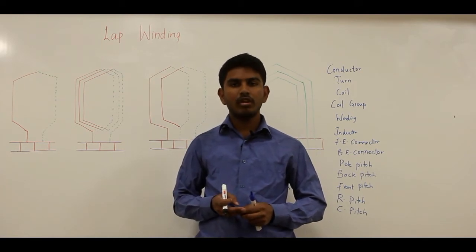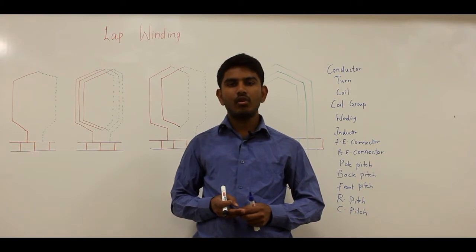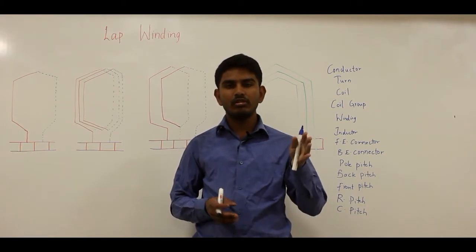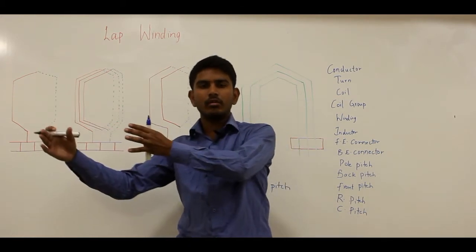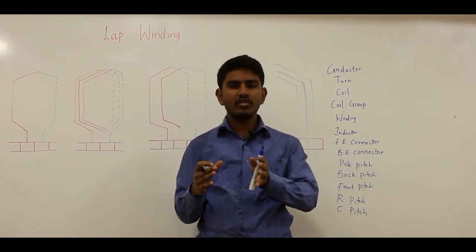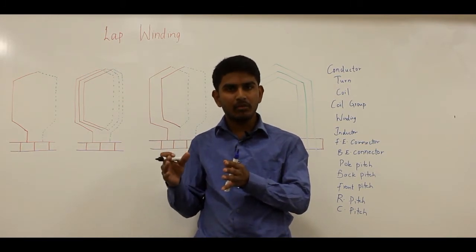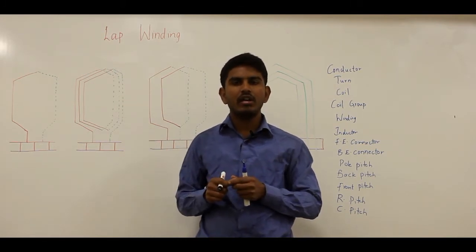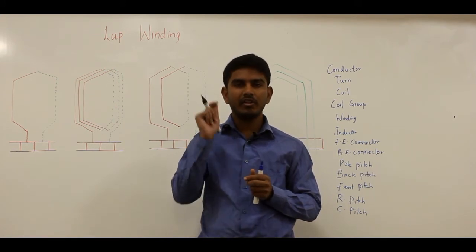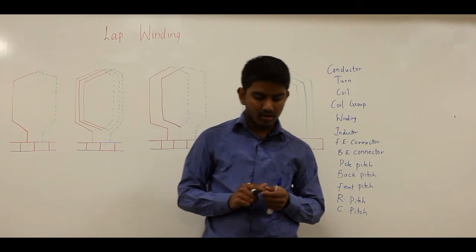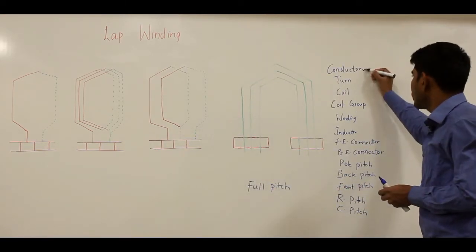In a heteropolar machine you have a field system consisting of alternate north and south poles — if you have one north pole there will be one south pole, again north pole, again south pole. A machine employing such a field system is your heteropolar machine. A homopolar machine is where the field system has only one active pole. Now let us talk about a few basic terms.